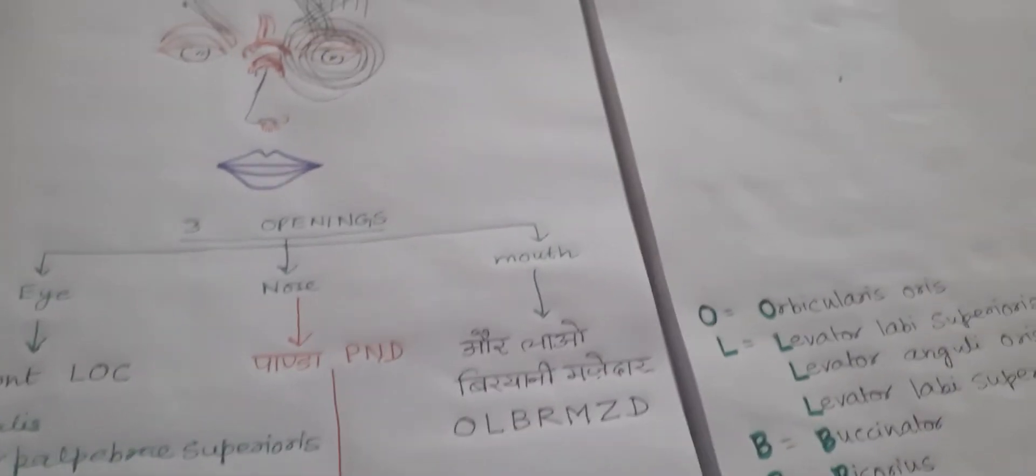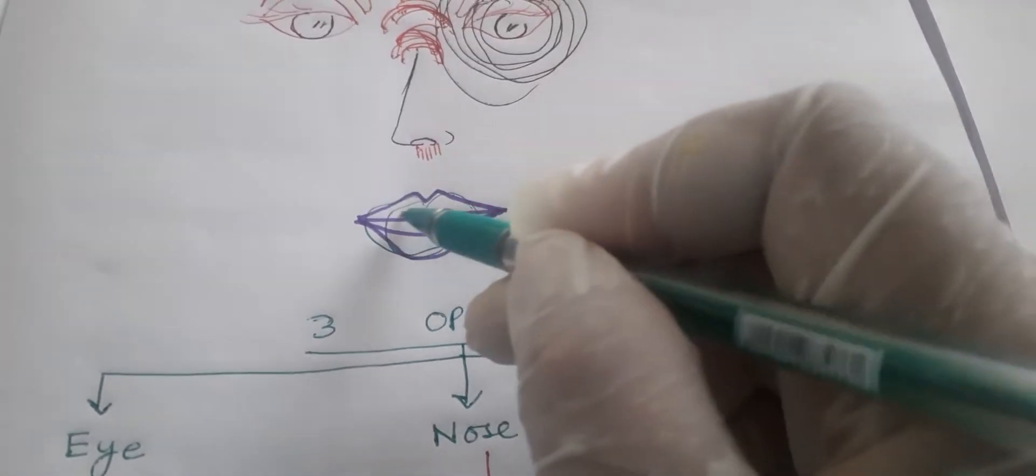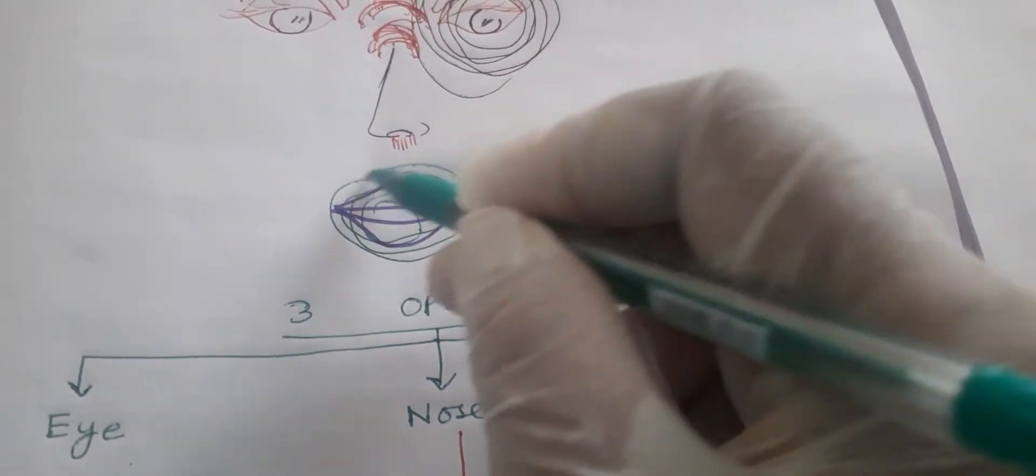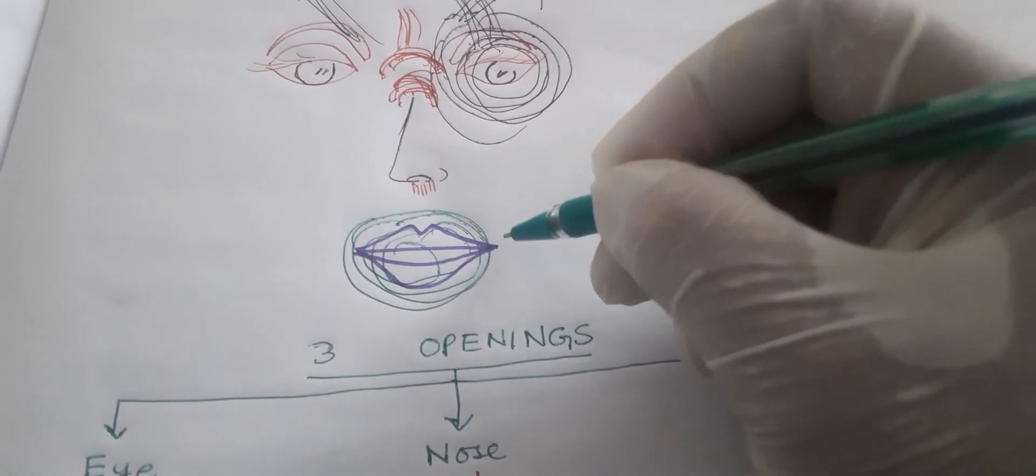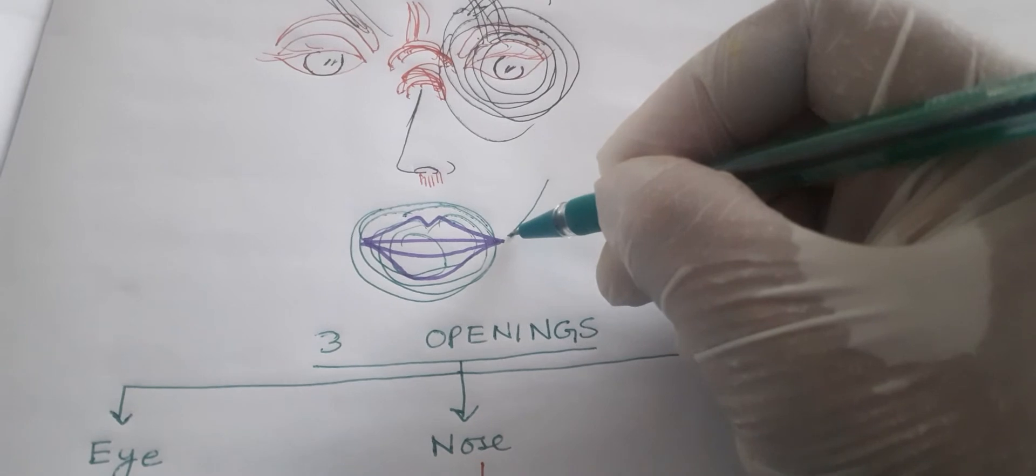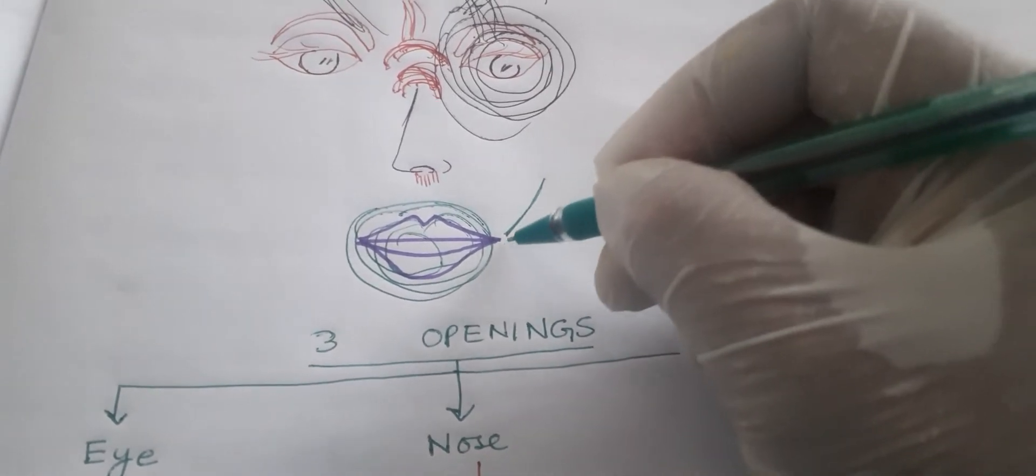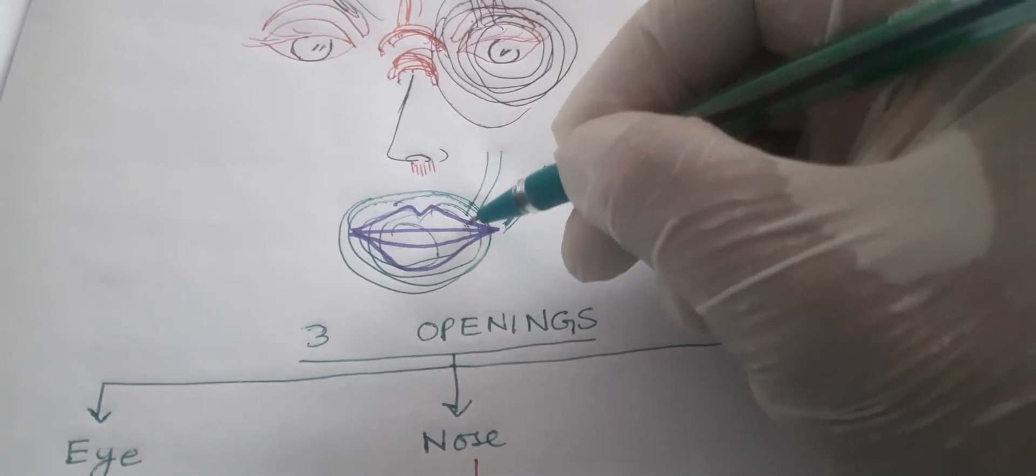Now see where exactly it is. Around the mouth there is orbicularis oris. Now upper lip at the angle - it is elevated, elevating this muscle. So levator anguli oris, levator labii superioris.